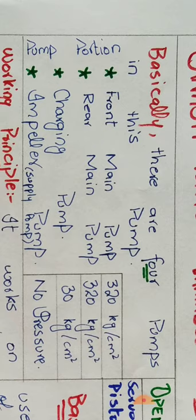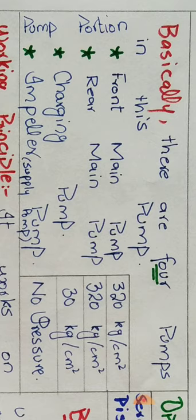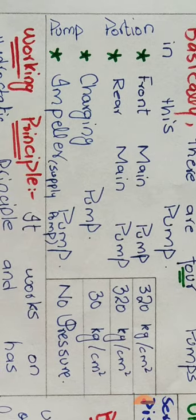In the pump portion, we have four pumps: two main pumps and two other pumps. The front main pump and rear main pump both have pressure of 320 kg per cm². The charging pump has pressure of 30 kg per cm². After that, we have the impeller pump which doesn't have any pressure.